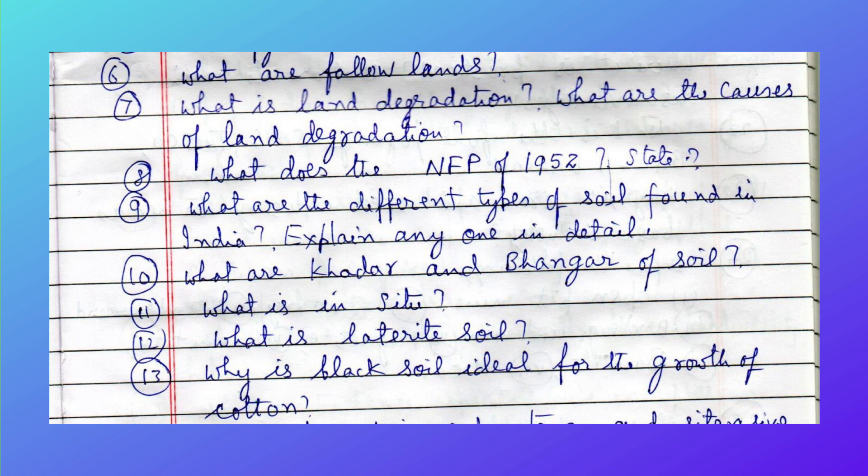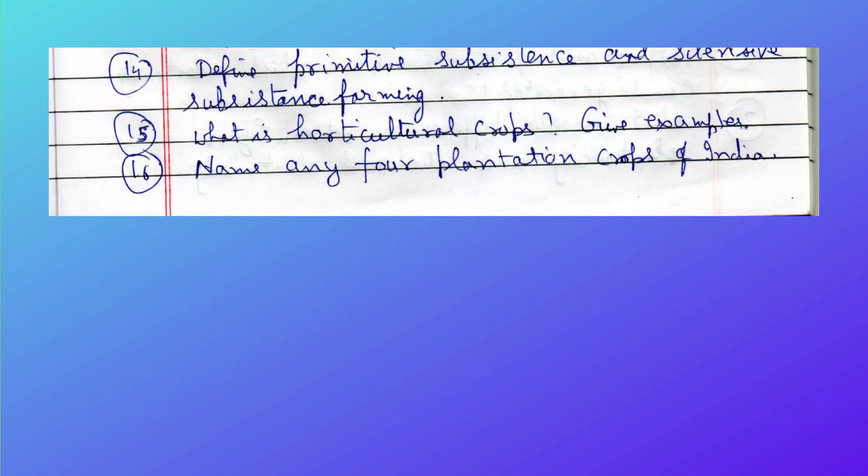What are Khadar and Bangar soils? What is in-situ? What is laterite soil? Why is black soil ideal for the growth of cotton? Define primitive subsistence and intensive subsistence farming.